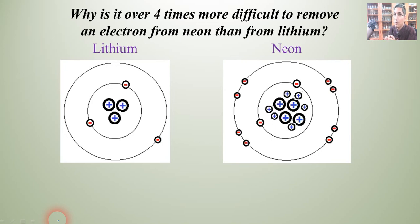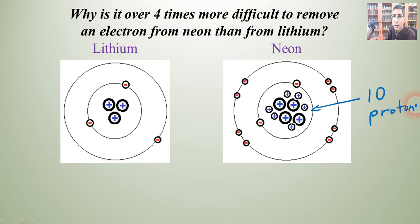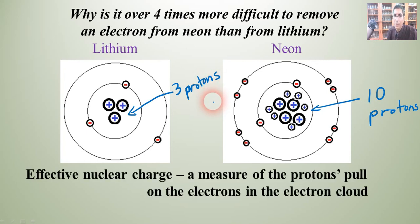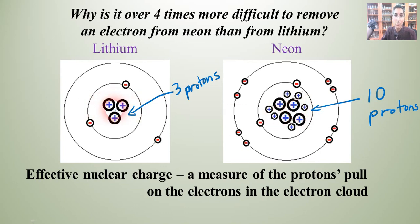What's the factor here — is it the Q, the charge, or the D, the distance? I hope you can see that it is the Q — the charge. We have 10 protons in neon trying to hold in those two energy levels, whereas in lithium we only have three protons trying to do essentially the same job. This is an illustration of what we call effective nuclear charge — a measure of the proton's pull on the electrons in the electron cloud. Since neon has 10 protons, it has a much more effective nuclear charge than lithium with only three protons.